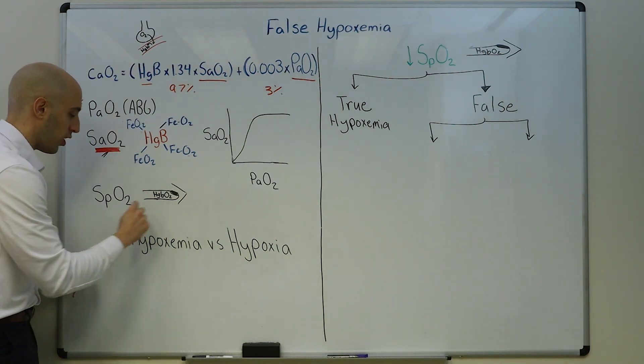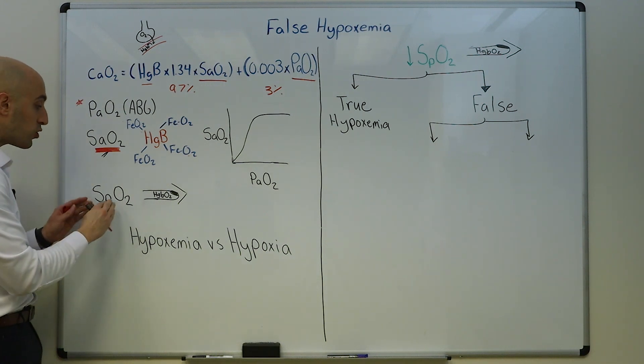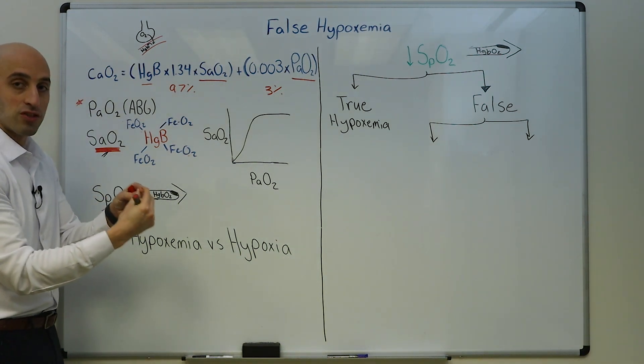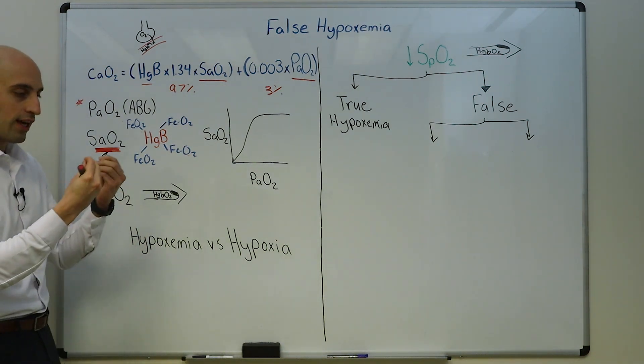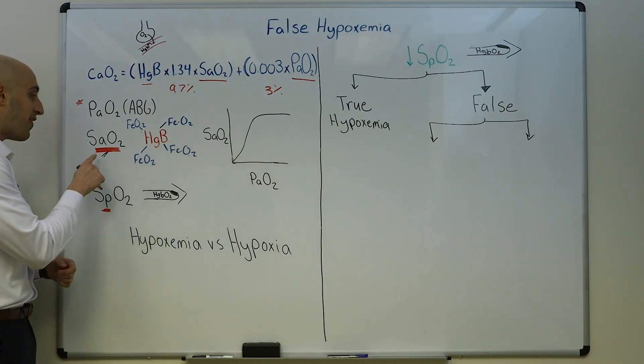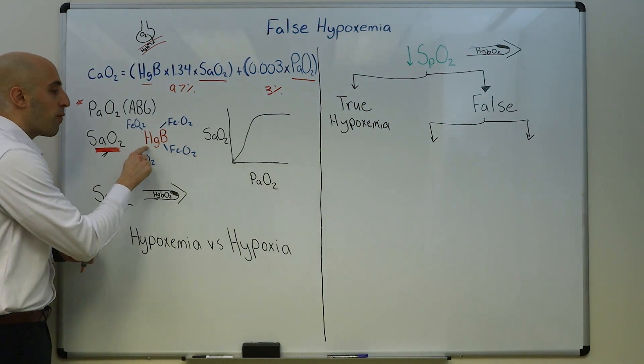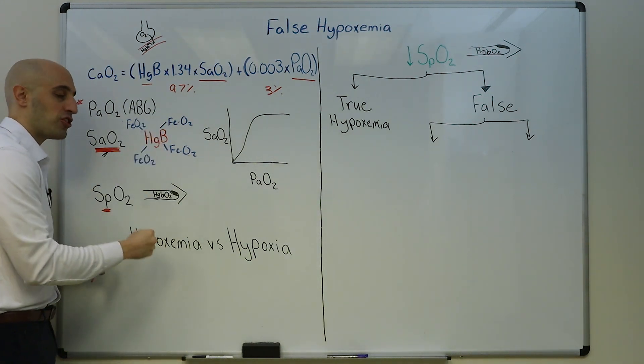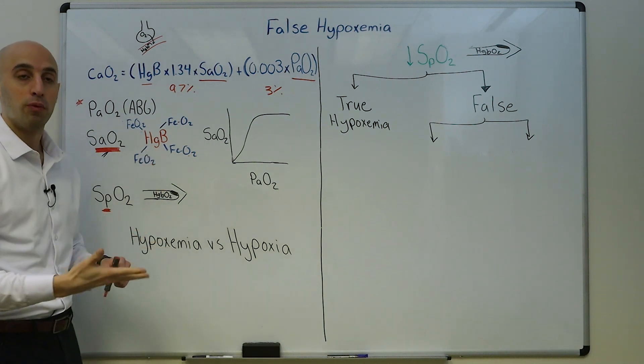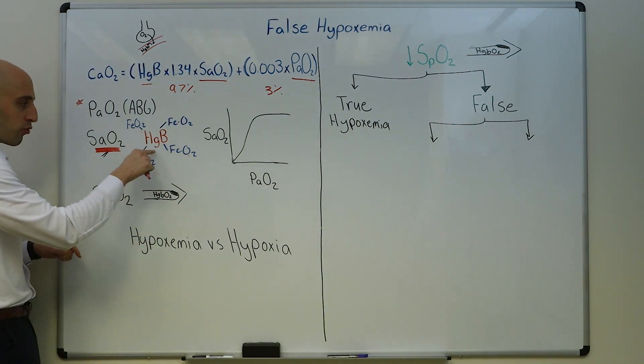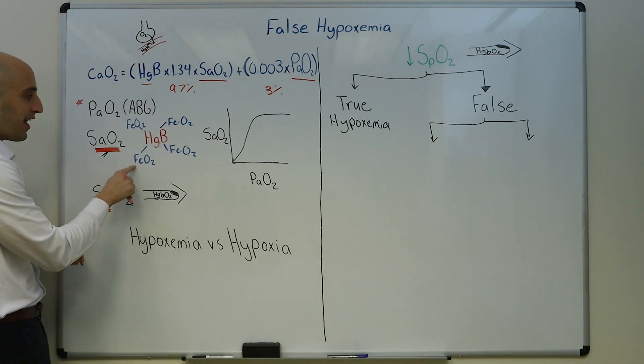Because they can't deliver enough oxygen molecules due to the lack of hemoglobin. Let's now talk about the oxygen saturation of hemoglobin, and in order to do that we first have to distinguish SaO2 versus SpO2. SpO2 is based on the pulse ox, and I remember that here's the P, pulse ox.